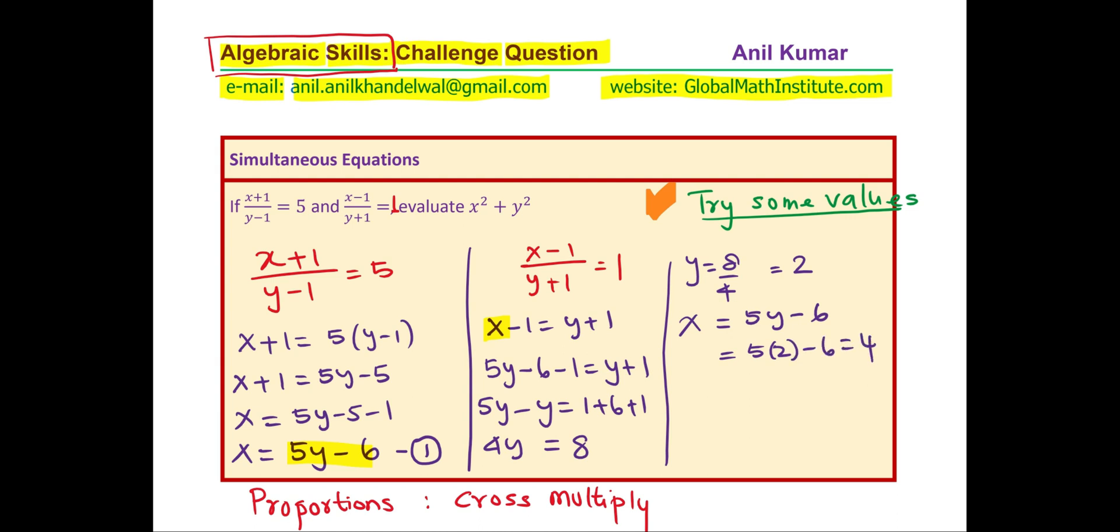So we have both x and y values and now we can write down the answer. We need to find x square plus y square, x is 4, so 4 square plus 2 square which is 16 plus 4 which is 20.